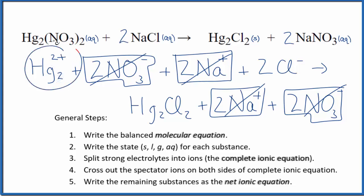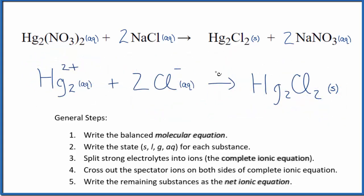Do note that this is the mercury one ion Hg two, two plus. I'll clean it up, write the states. We'll have our net ionic equation. So this is the balanced net ionic equation for Hg2(NO3)2 plus NaCl.